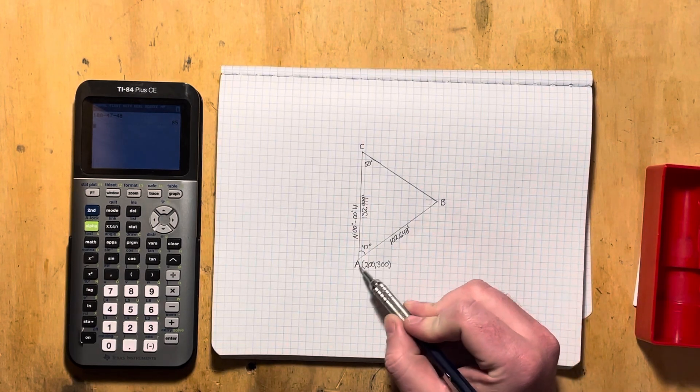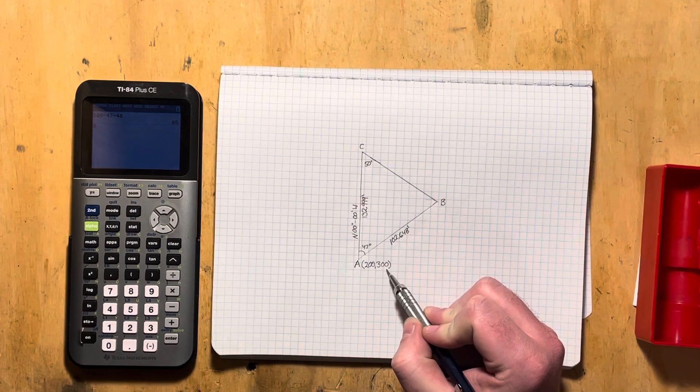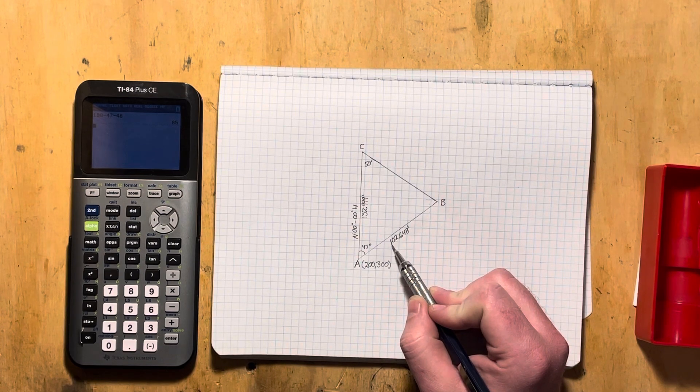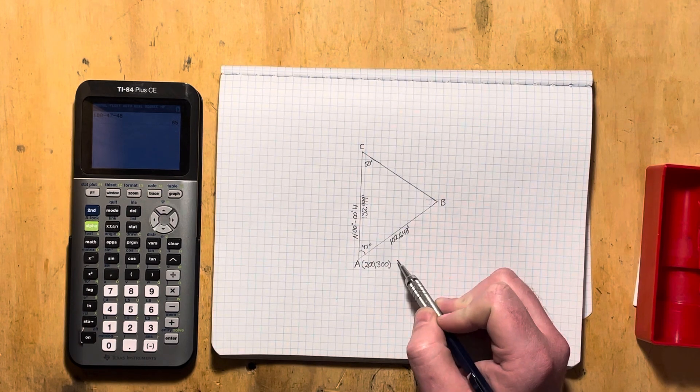We know that A's location is at 200 north, 300 east. We know the line AB is 102.648 feet.